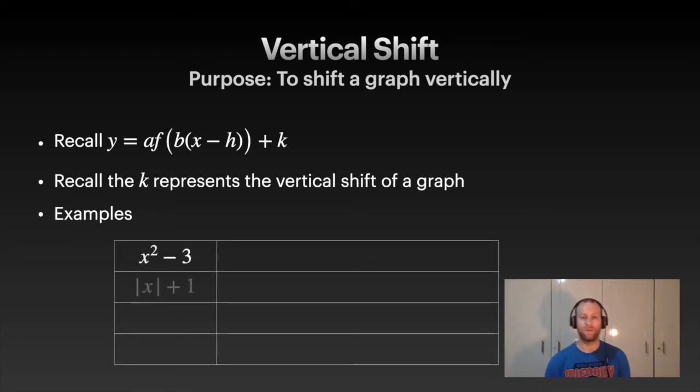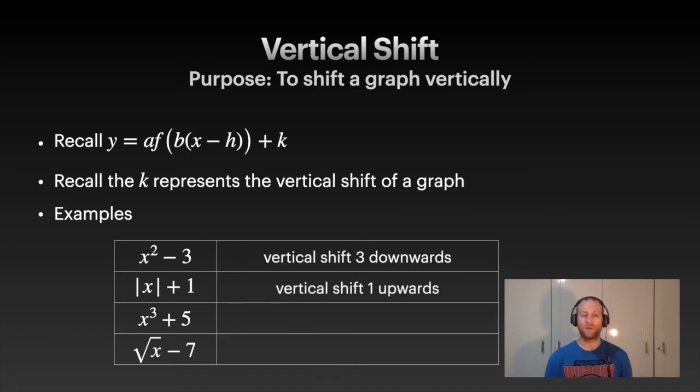Again, we've got a bunch of different functions. Notice the minus 3 is outside the squared, the plus 1 is outside the absolute value, the plus 5 is outside of the cubic function, and the negative 7 is outside the square root. So again, because it's outside, that's vertical. For the first one here we go down 3, then we're going to go up 1, then we're going to go up 5, and we're going to go down 7. So the sign tells you what direction it is, it's pretty straightforward once you get the hang of it.